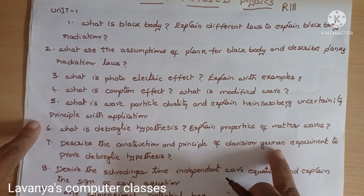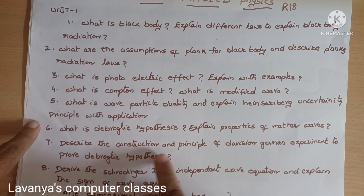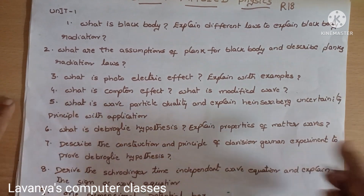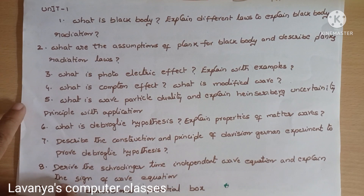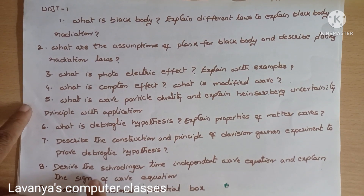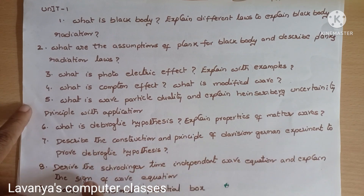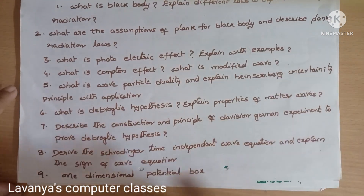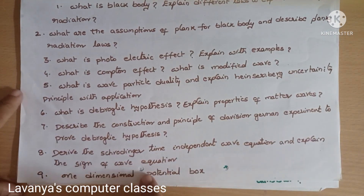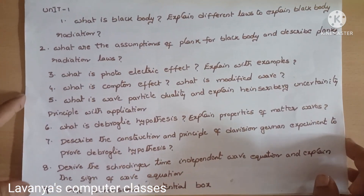Seventh question: describe the construction and principles of the Davisson-Germer experiment to prove the de Broglie hypothesis. Eighth question: derive the Schrödinger time-independent wave equation and explain the significance of the wave equation. Ninth question: one-dimensional potential box.